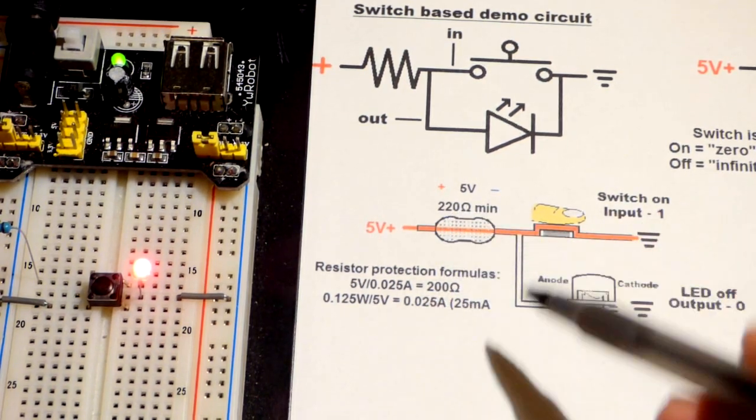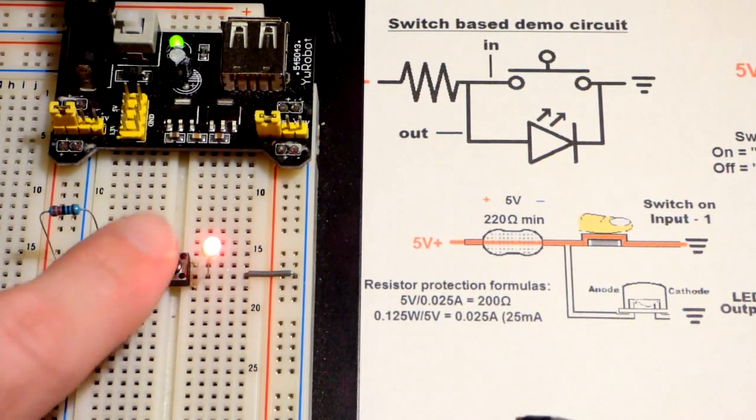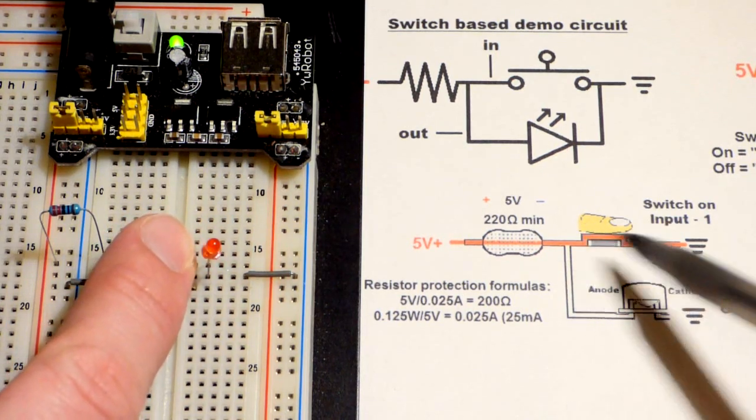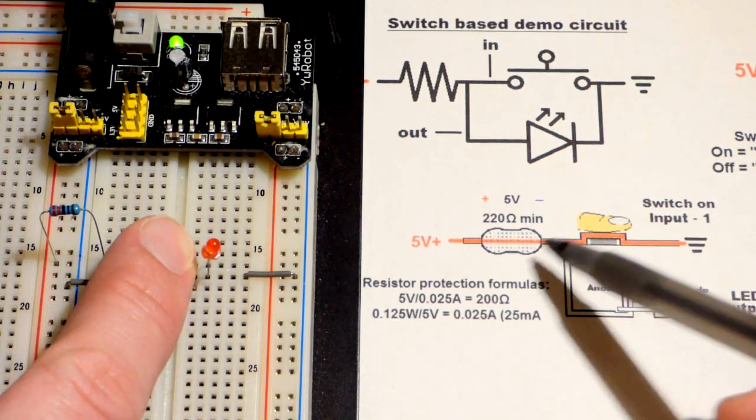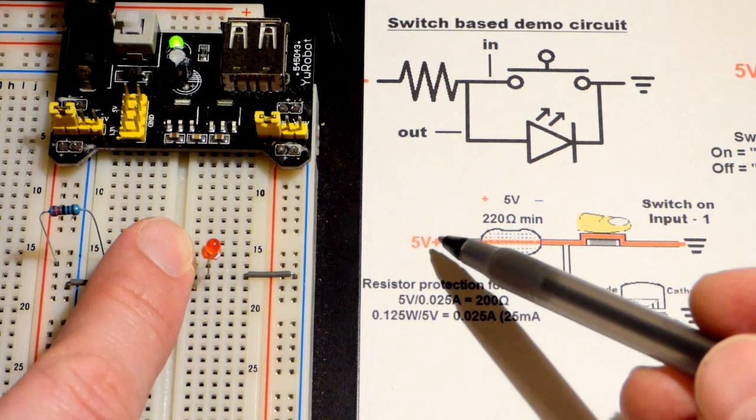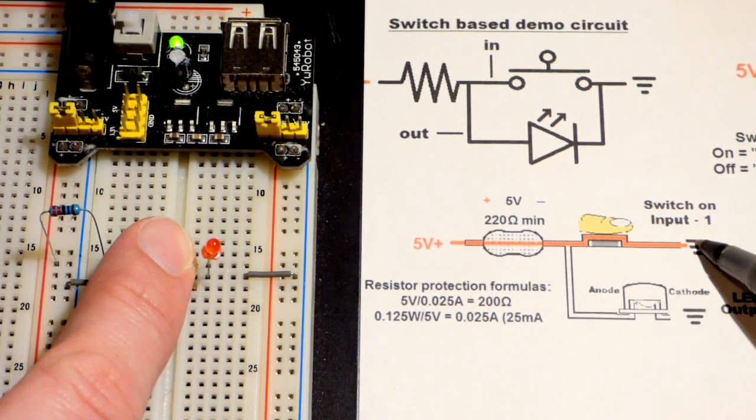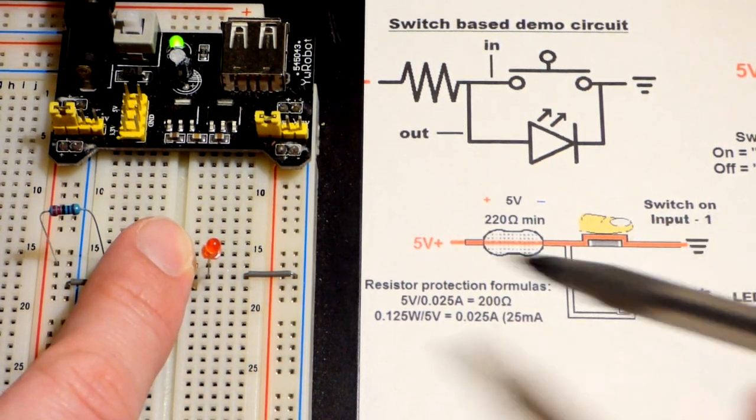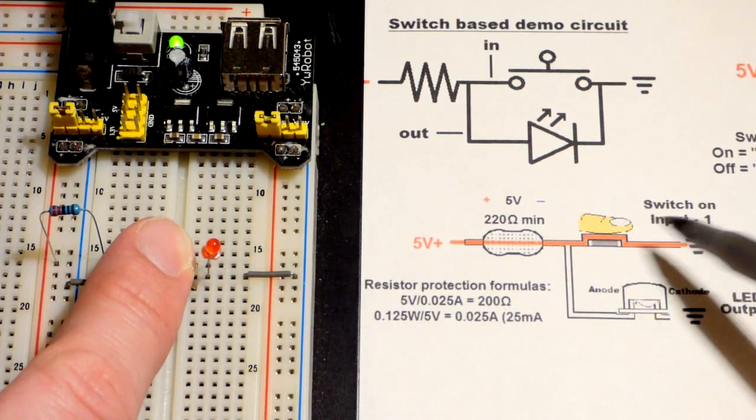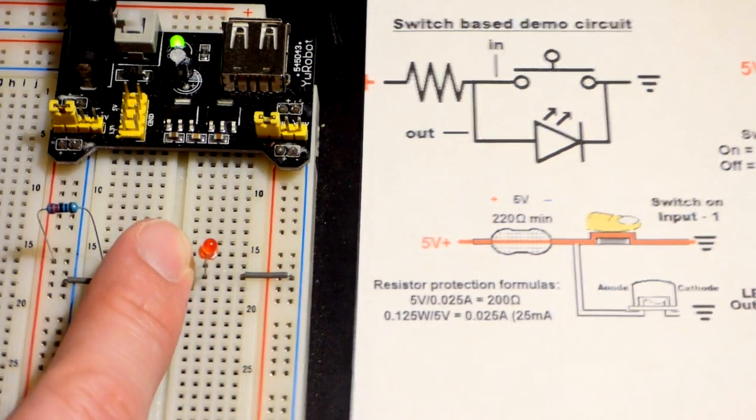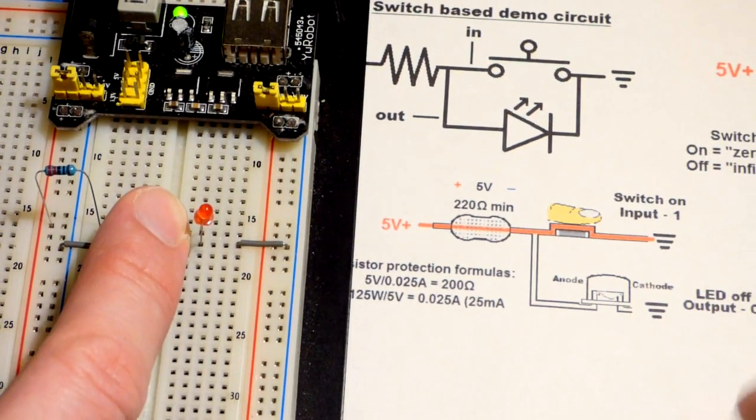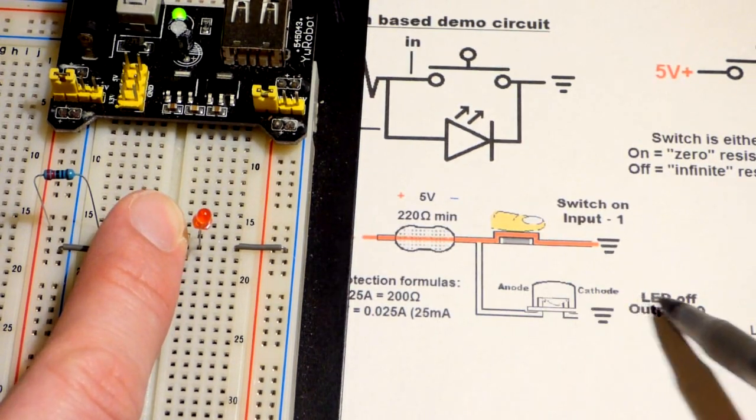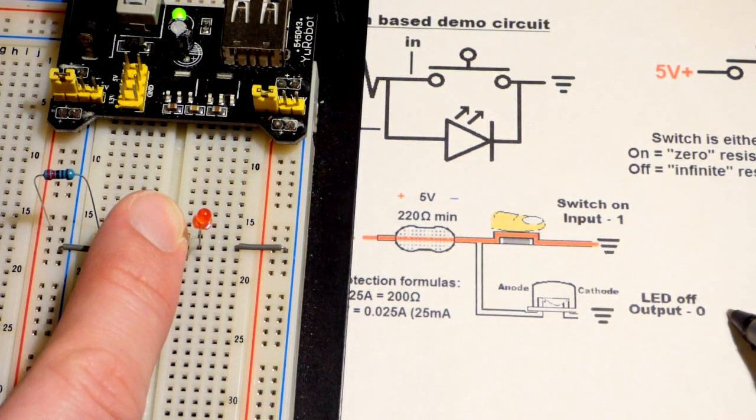And so when we close the switch, as you can see in this diagram, now the LED is out. That's because I'm holding down the switch, current's going through the resistor, and the switch. So we consider this our input, there's current flowing through it, so we consider that on. The LED, though, there's no current flowing through it, so we consider that off.